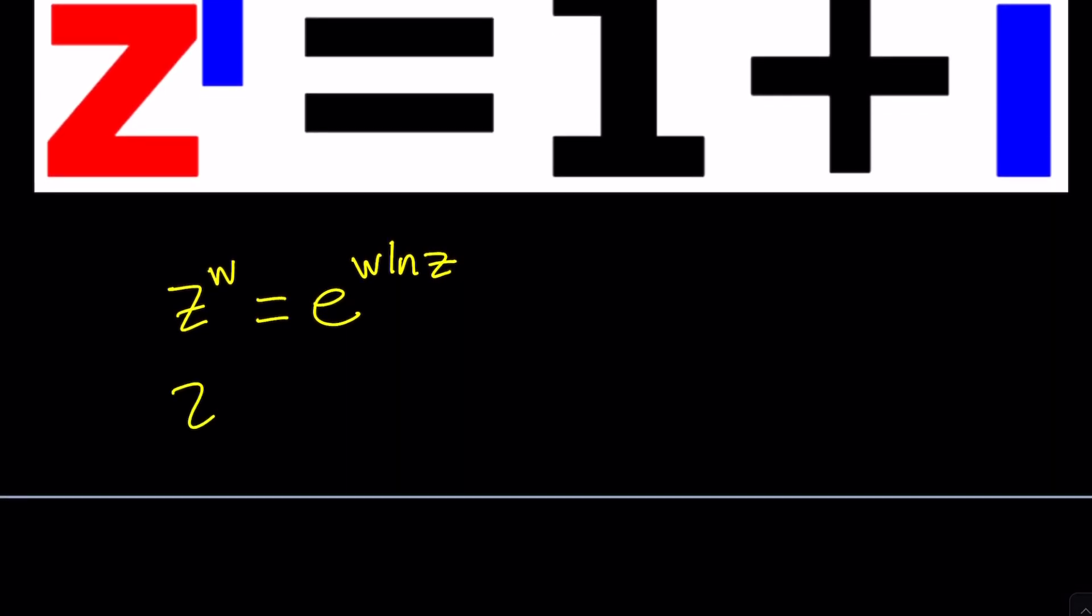Since we have z to the power i we can write it as e to the power i ln z. Awesome. Now let's go ahead and set this equal to 1 plus i. And now this is the equation we're supposed to solve.